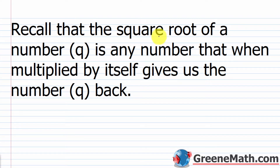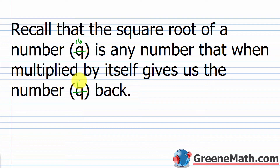I want you to recall that the square root of a number — let's just say that number is q as a placeholder — is any number that when multiplied by itself gives us the number q back. You can just pick a number you know is a perfect square. For example, we know that 4 times 4 is 16, so 16 is a perfect square. The square root of 16 is any number that when multiplied by itself gives us 16 back.